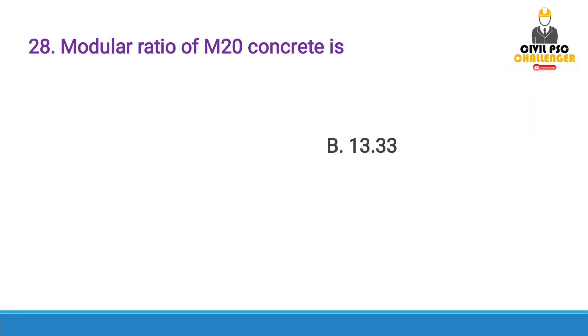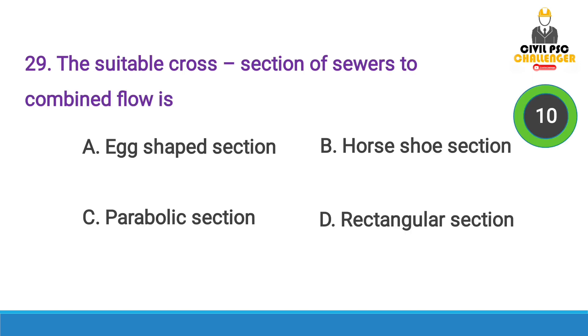Next question: The modular ratio of M20 concrete is — Answer option B, 13.33.